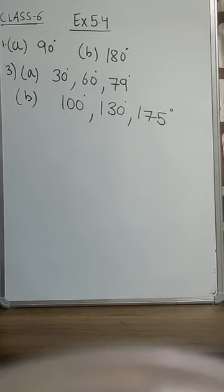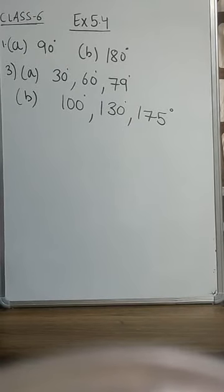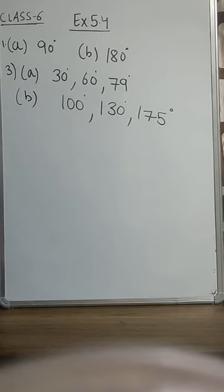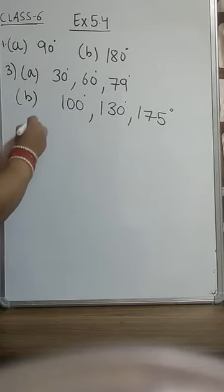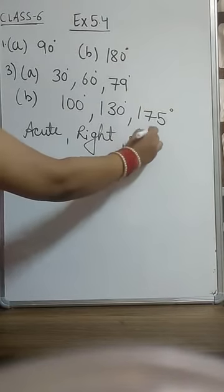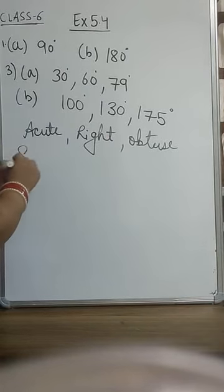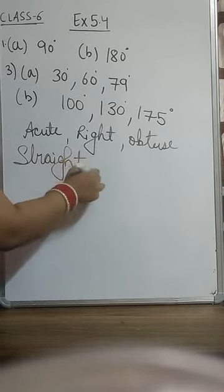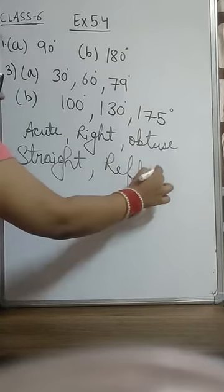In question number 4, you just have to use the protractor and write down the measure — you can measure with the help of a protractor yourself. Question number 5 and question number 6 are also the same type — use the protractor. Question number 7 is fill-ups. You can do it yourself based on the definitions of acute, right, obtuse, straight, and reflex angles — all definitions must be clear to you.